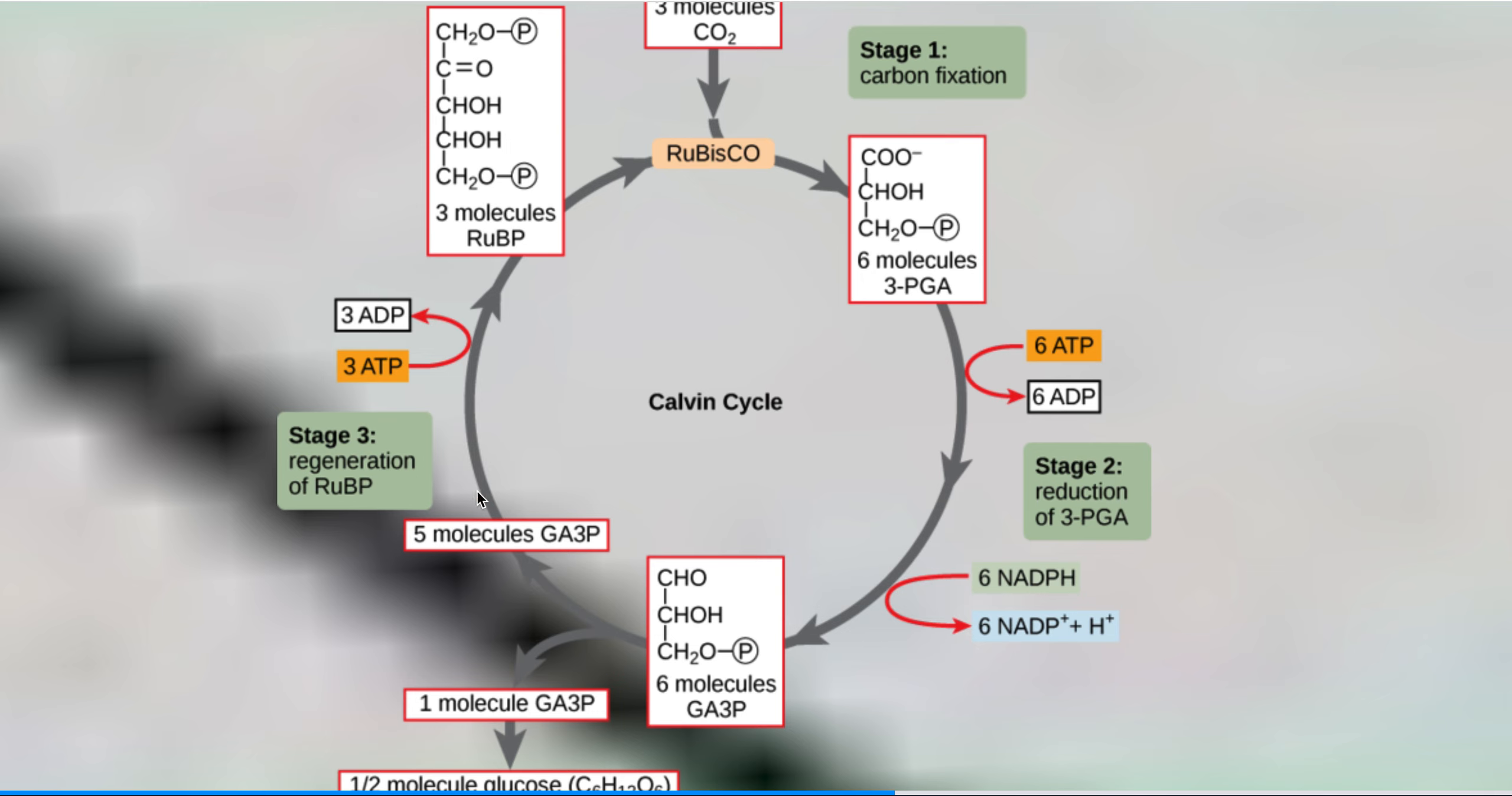But that regeneration phase also uses ATP. So where does the plant get all this ATP from? Where does it get its NADPH from? Well, it gets that from the light reactions. So this cycle, the Calvin cycle, does not work without ATP and without NADPH, and it does not work in the dark because rubisco, the enzyme itself, has to be light, is a light-activated enzyme, okay?